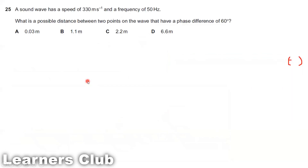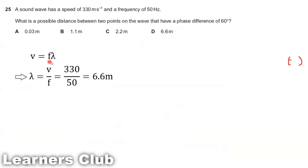Question 25. A sound wave has a speed of 330 meters per second and a frequency of 50 Hz. What is the possible distance between two points on the wave that have a phase difference of 60 degrees? The velocity and frequency are given, so first we determine the wavelength: λ = v/f = 330/50 = 6.6 meters.